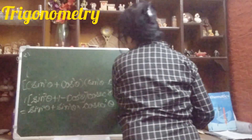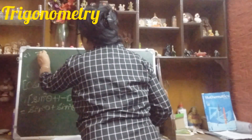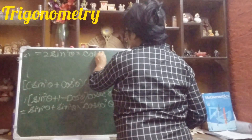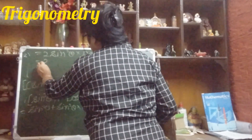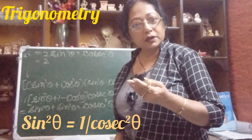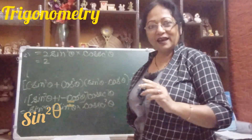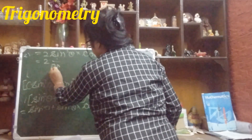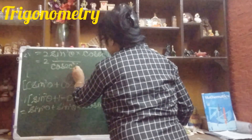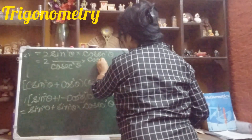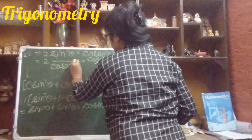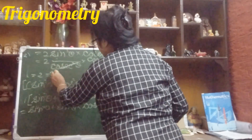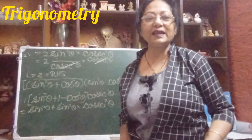Now, 2 into sin²θ into cosec²θ. Since cosec²θ is the reciprocal of sin²θ, we write it as 1/sin²θ. So we have 2 × sin²θ × (1/sin²θ). The sin²θ terms cancel out. What we get is 2, which is our right hand side. Hence proved.